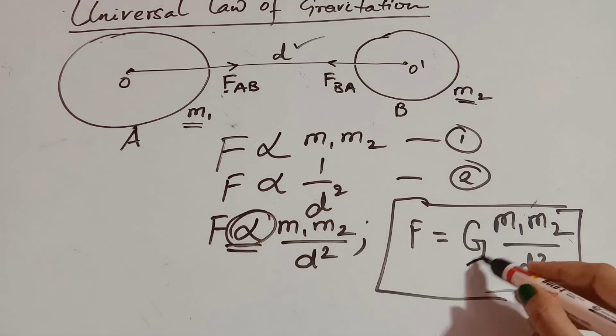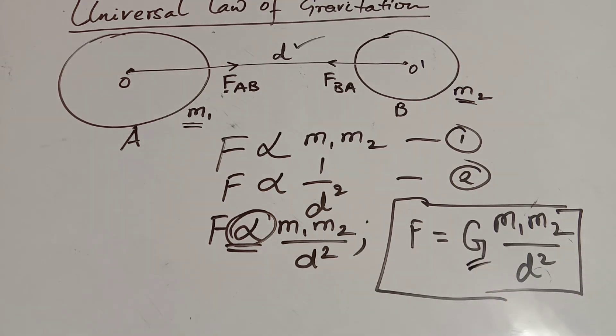Now, what is G? G is known as the universal gravitational constant.